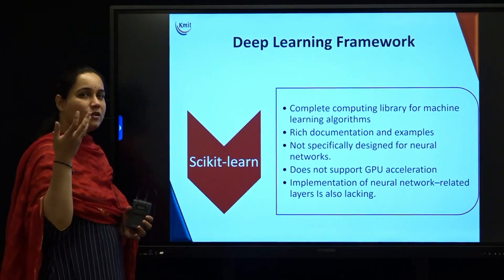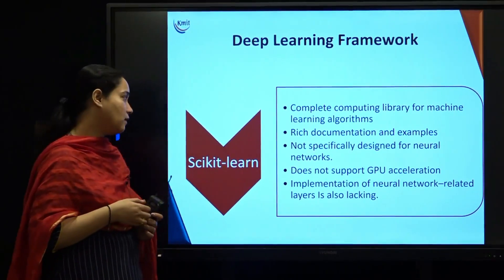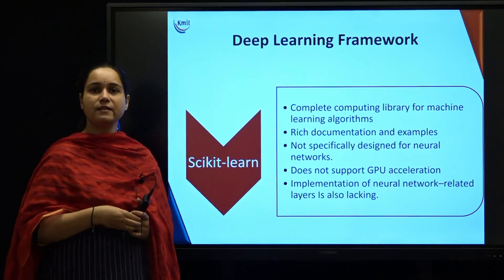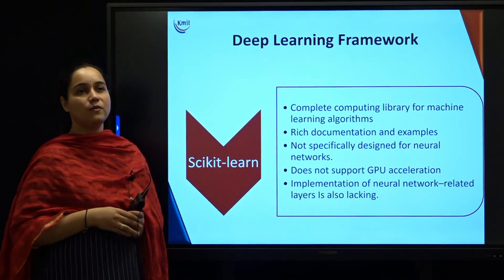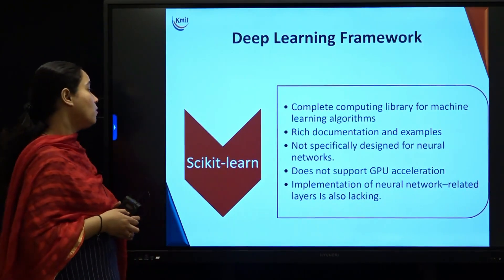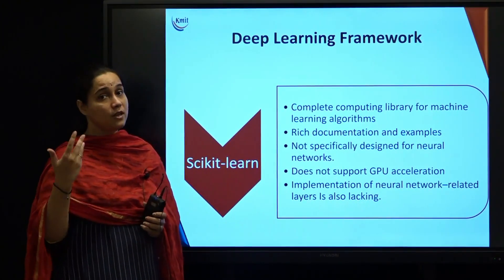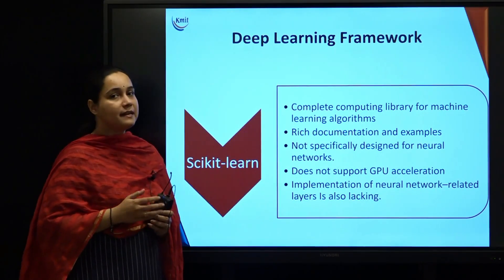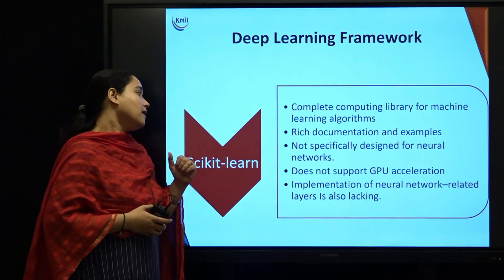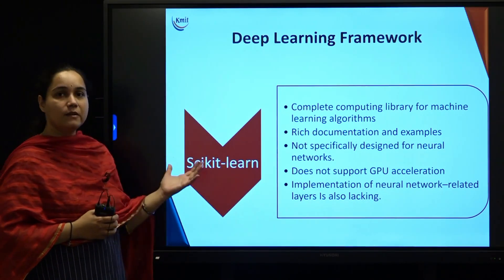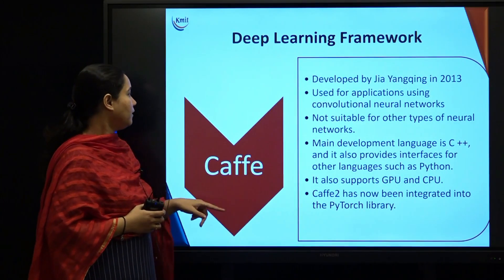However, you won't be using scikit-learn for neural networks because it is not specifically designed for them — it is more oriented towards machine learning algorithms and lower amounts of data. Compilation time will be very high, it won't provide better accuracy for neural networks, and it does not support GPU acceleration. Implementation of neural network-related layers is also lacking in this library.